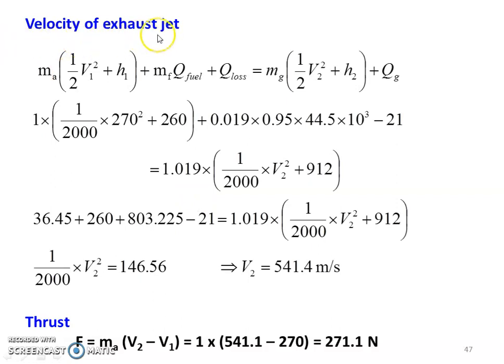Now we have to calculate velocity of the exhaust jet. Writing the steady flow energy equation. Mass of the air into one-half V1 square plus H1. This is the inlet air velocity, kinetic energy and enthalpy. Fuel supply, mass of fuel into calorific value of the fuel plus heat loss Q loss. This is the inlet condition. Minus gas is leaving, mass of the gas into one-half V2 square plus H2 plus QG. Gas with enthalpy is leaving.